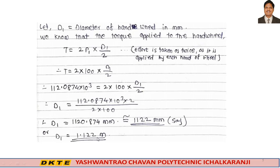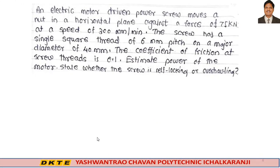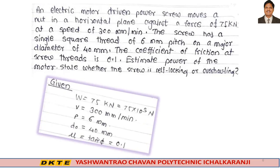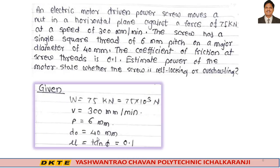This is the answer to the first question — diameter of the hand wheel is 1.122 meters. Now let's look at another problem. An electric motor through a power screw moves a nut in a horizontal plane against a force of 75 kN. W is given as 75 kN, at a speed of 300 mm per minute. The screw has a single square thread of pitch 6 mm on a major diameter of 40 mm.